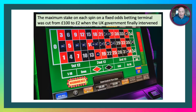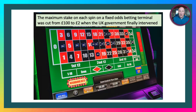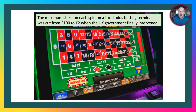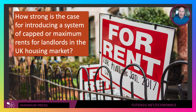A really good example of maximum prices is in gambling. The maximum stake on each spin on a fixed odds betting terminal was cut from £100 to £2 when the government finally intervened in the market.